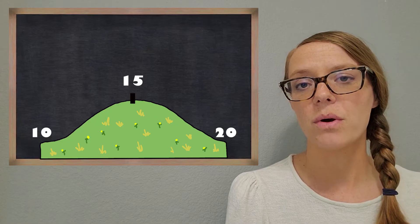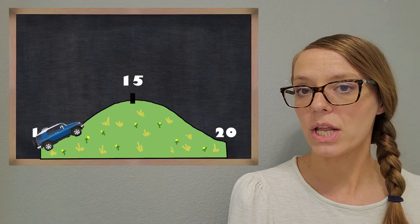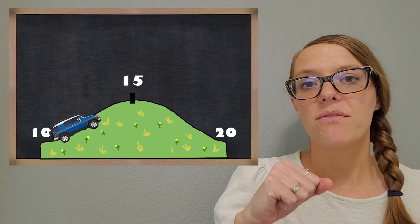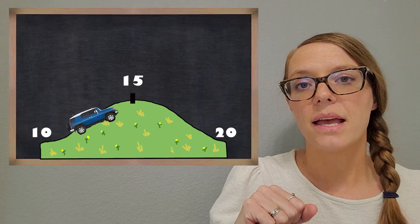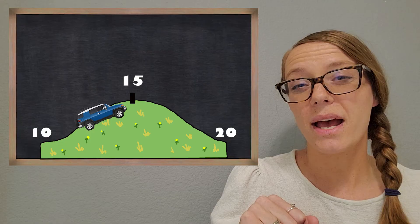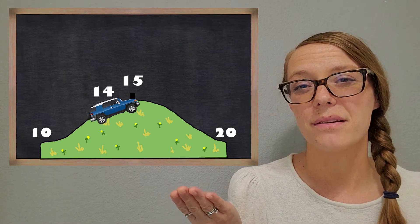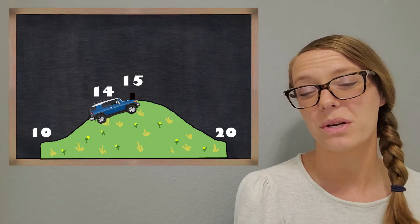So if we can pretend like we're driving a car and we're starting at 10, and we're driving up that hill, and let's say we run out of gas right at the 14. What do you think would happen? So we didn't get up to the top of the hill. We ran out of gas right at the 14.